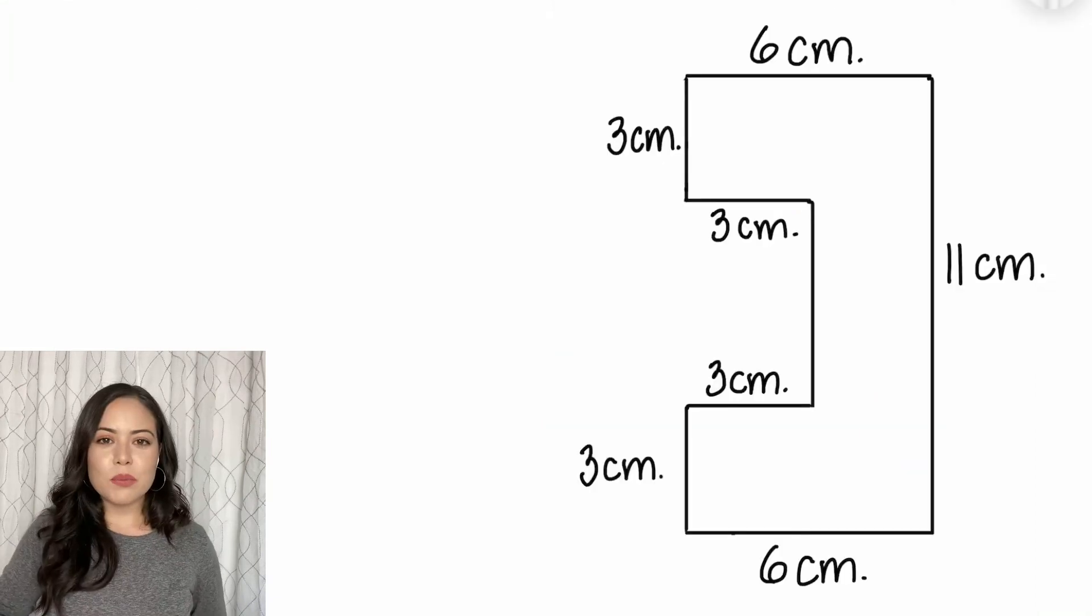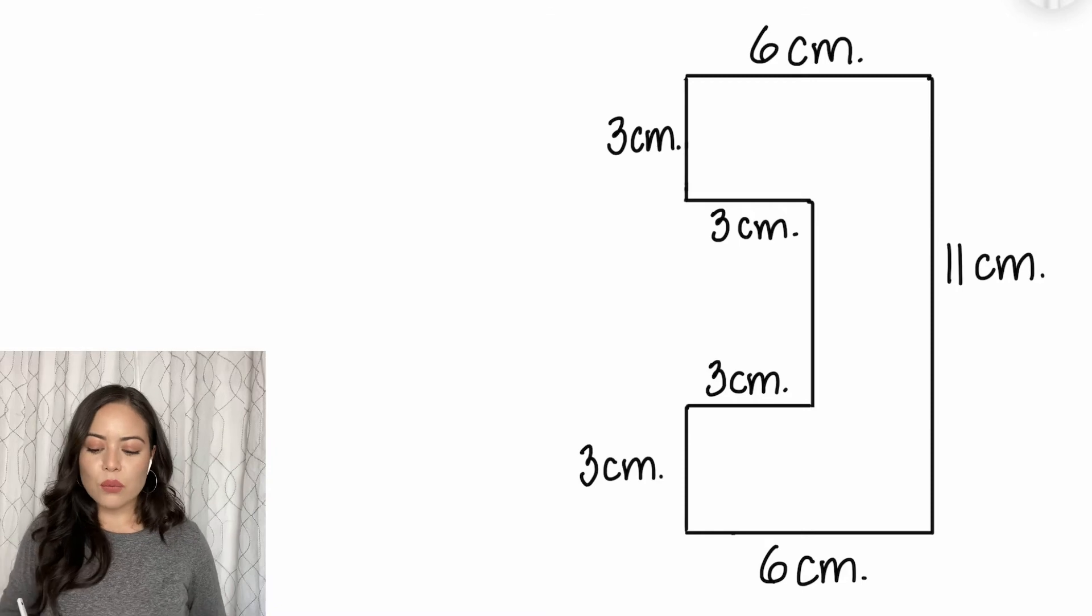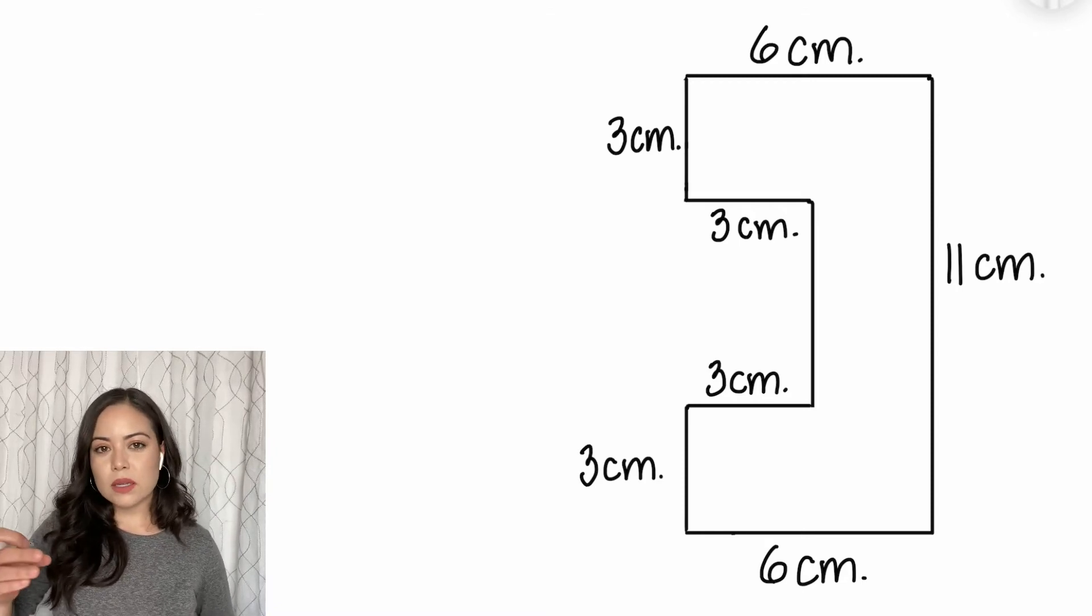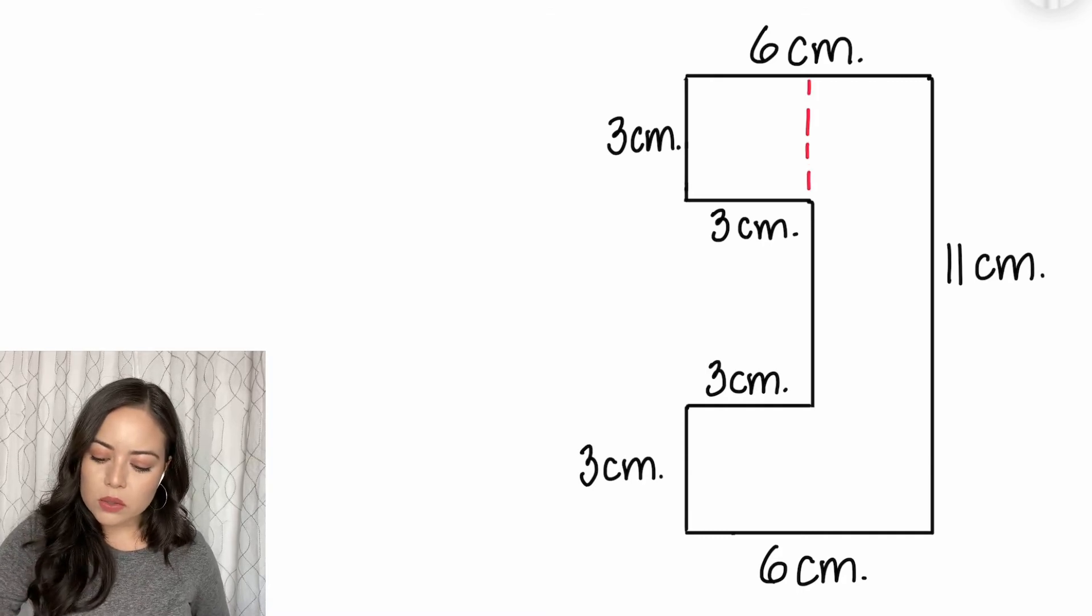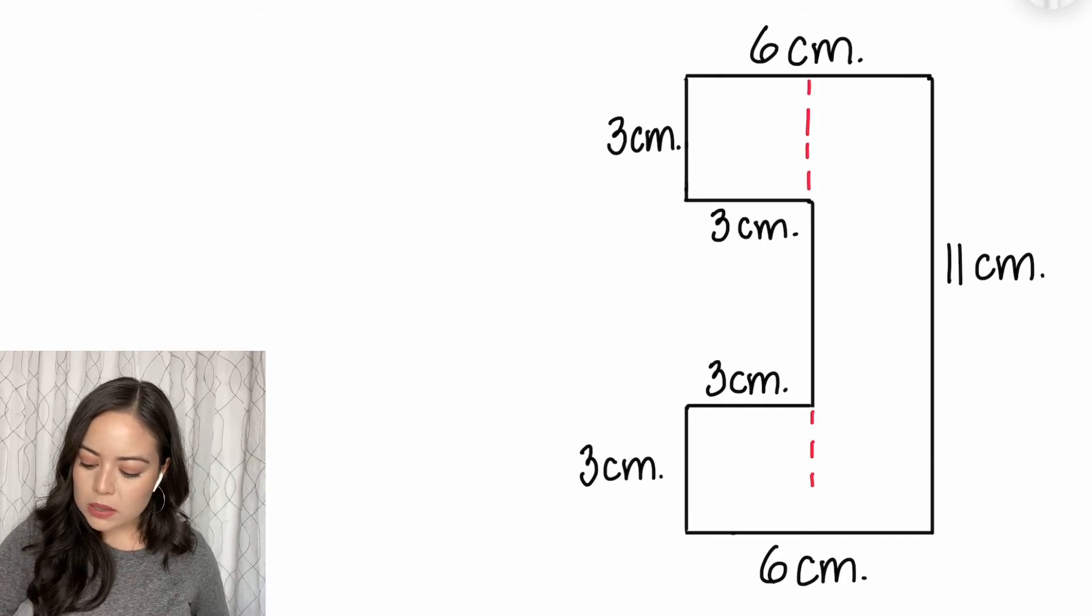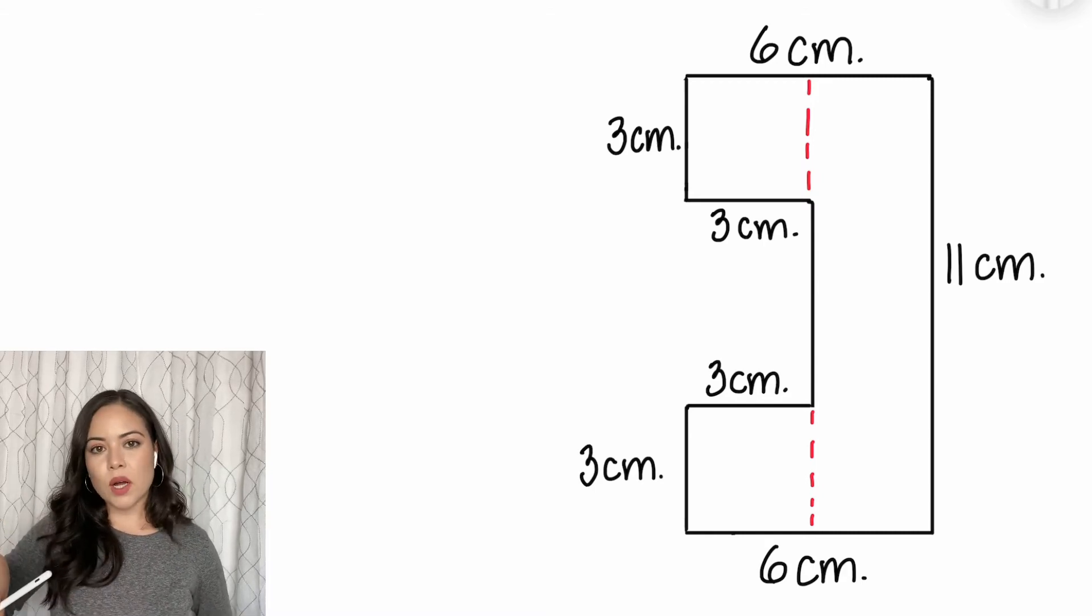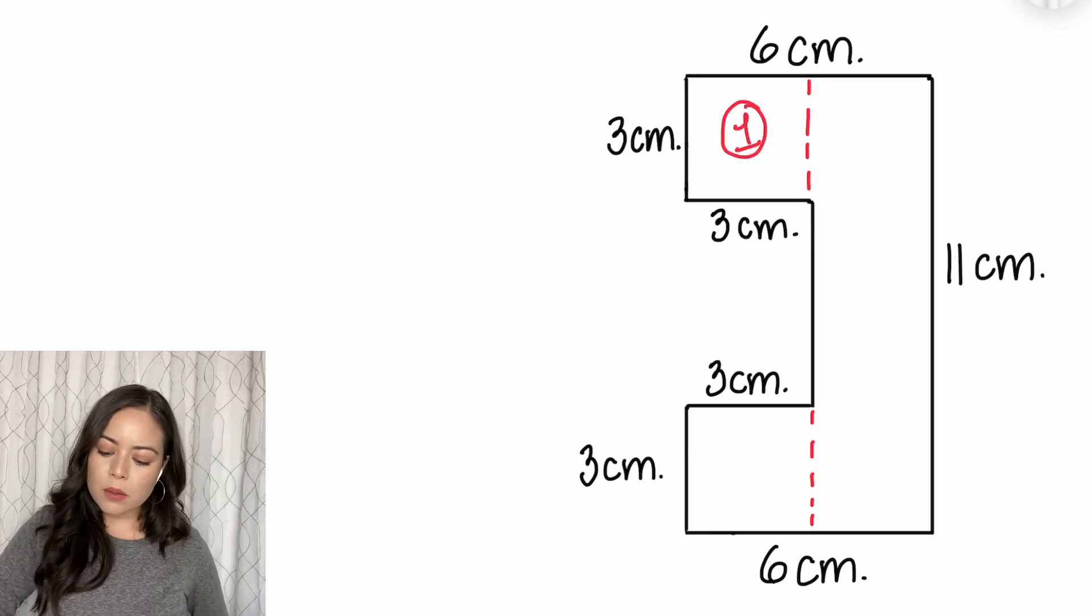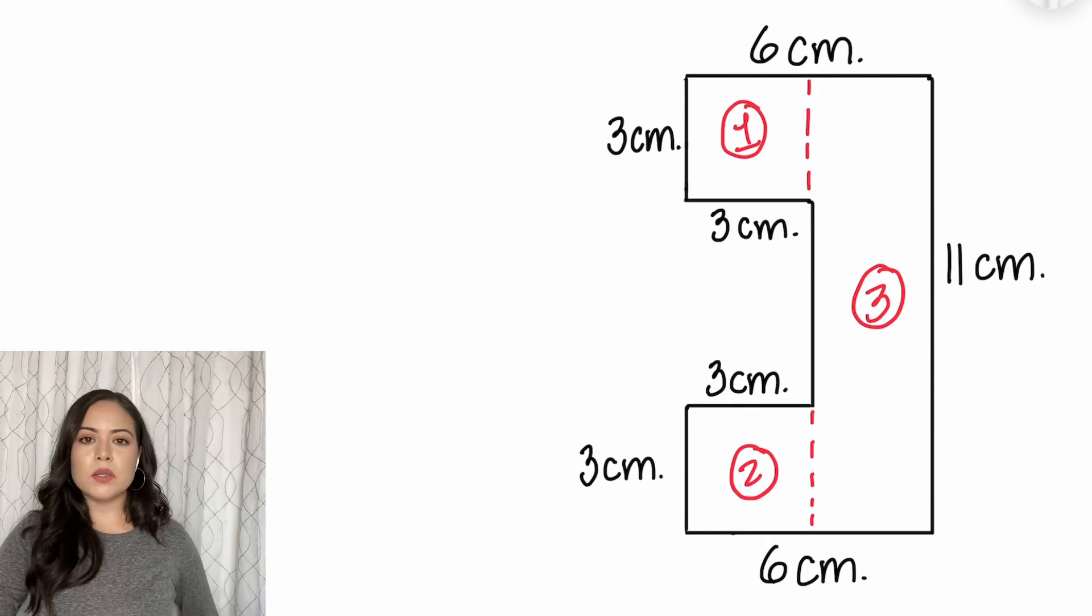Moving on to example two, we have a very large rectangle with a little piece cut out in the center. We're going to cut it up into three smaller shapes and find the area of each part. I'm going to end up with two squares and then that long rectangle on the side. I'll label them part one, part two, and part three, then find the areas of each.